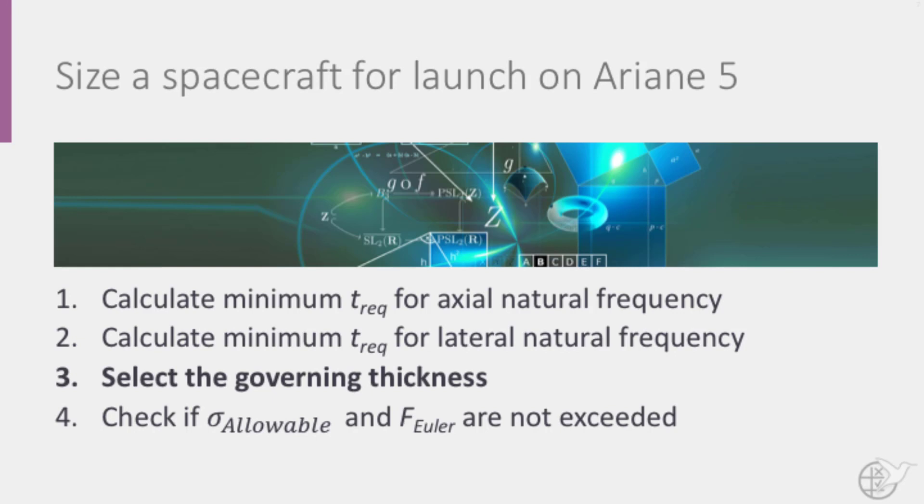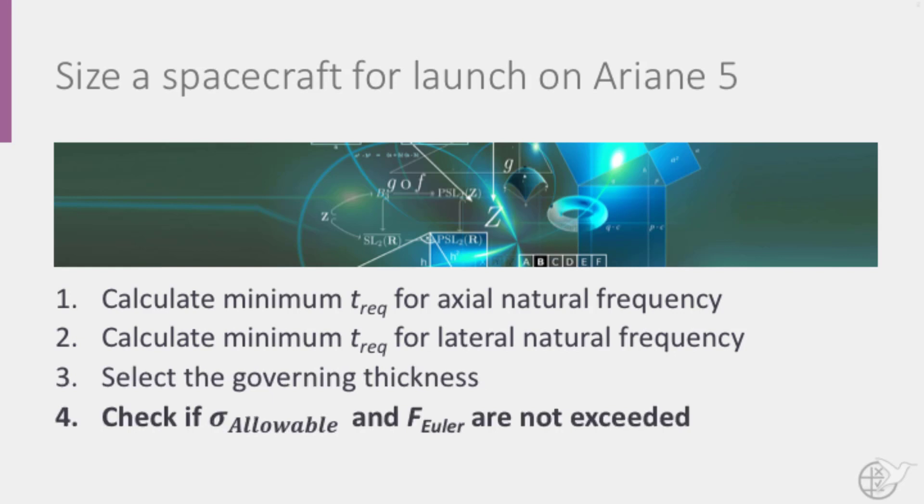In the third step, we select the governing thickness. And finally, we check that the maximum allowable stress and the Euler buckling load for axial loading are not exceeded. These calculations can simply be done on some paper and using a calculator. In my case, I will use a digital piece of paper so you can follow my steps.